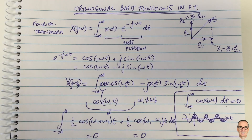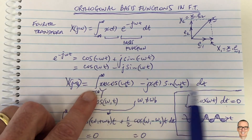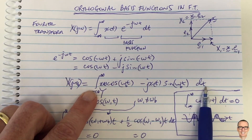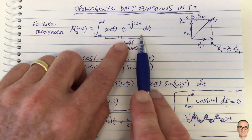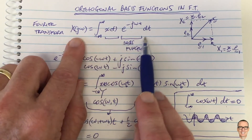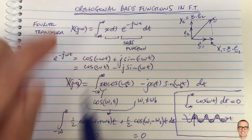That means there's zero contribution in the Fourier transform for one basis function projected onto the other, and that means they are orthogonal. That's the definition of orthogonal. In signals and systems, orthogonal means if you multiply two functions together and add them up over all time and get zero, then they're orthogonal. We've actually shown here that the basis functions of the Fourier transform are orthogonal.